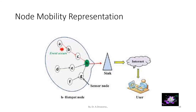The node mobility representation is shown here. In this diagram, an event occurs at node A. From node A, the information is gathered and passed to the user through the sink. The gathered information is passed to hotspot node H, from which it reaches the sink — here the base station acts as a sink. From the base station, it is passed to the internet, and from the internet the information reaches the user. This is how node mobility operates.